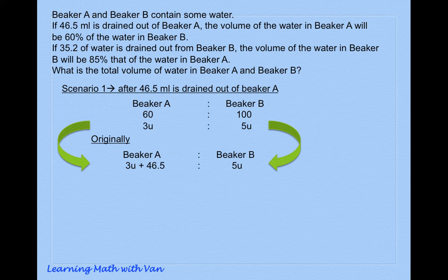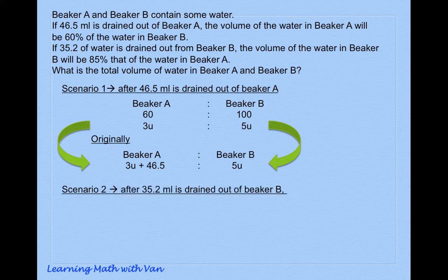In scenario one, no change has been done or nothing has happened to beaker B, so beaker B will remain as 5 units. You see how I can actually link up the relationship between the two, beaker A and B? The next thing is to solve in units, but how? Let's take a look at scenario two. In scenario two, after 35.2 ml is drained out of beaker B,